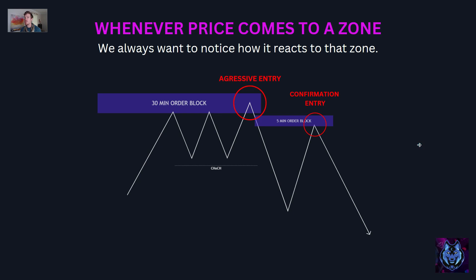Whenever price comes into a zone, we always want to notice how it reacts to that zone. We've got the 30-minute order block here and price came up to the zone. If we had to enter right then and there, that would have been an aggressive entry, which is a little more risky. But what we do is we notice price is consolidating, creates this liquidity here. Then price breaks the structure up, comes down, breaks the structure down, and we have this change in character. We go into the five minute and select this five-minute order block, which becomes our confirmation entry — a lot safer.